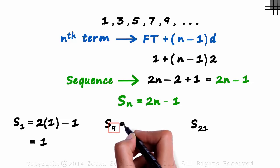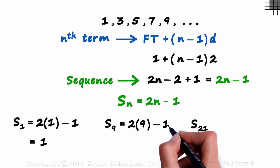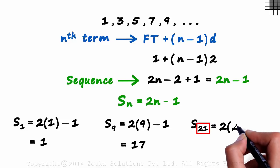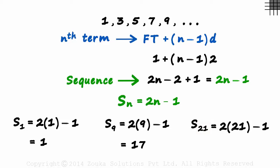The ninth term will be 2 times 9 minus 1, which equals 17. And the 21st term will be 2 times 21 minus 1, which equals 41. 41 is the 21st term of this sequence.